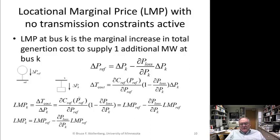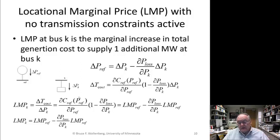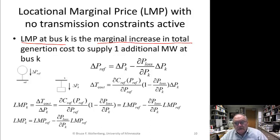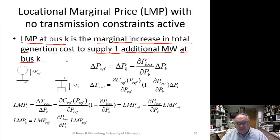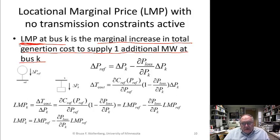There's a very simple formula for locational marginal price at the buses, and later I'll use the formula to see how it compares to the AC OPF result. The locational marginal price is the marginal increase in total generation cost to supply one additional megawatt at bus K. It's the basic definition of a Lagrange multiplier. We call it the locational marginal price. This is very important in the operating markets, and we have a whole lecture series on markets from the University of Minnesota.